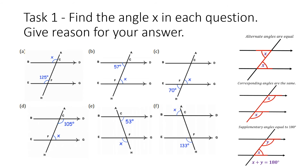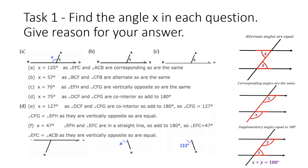Pause this video and have a go at these questions, where you find the value of X and give the reason. E and F were a little bit trickier. The answers are: A was 125, B was 57, C was 70, D was 75, E was 127, and F was 47.